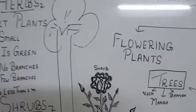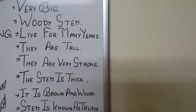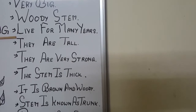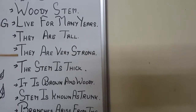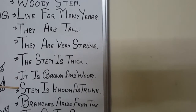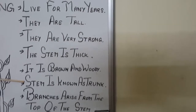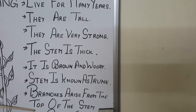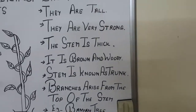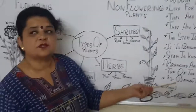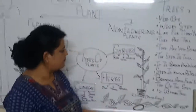When we talk about trees, they are very big and very tall, with a woody stem. They live for many years and are very strong. The stem is thick, brown and woody — it is known as the trunk. When the stem is thick and woody, we call it a trunk. The branches arise from the top of the stem. An example is the banyan tree, and the largest banyan tree can be found in the botanical garden in Kolkata.